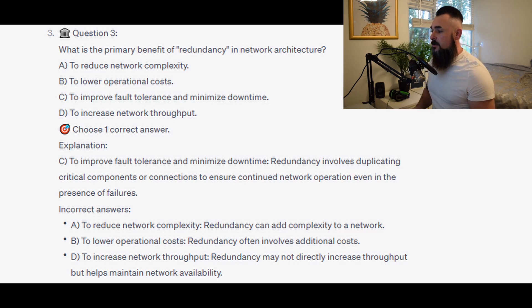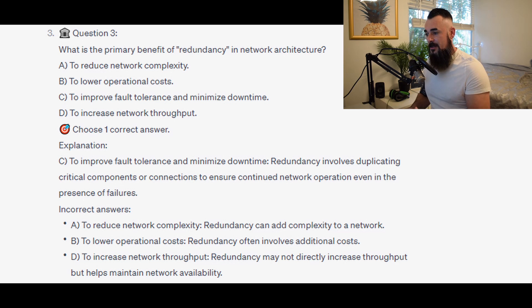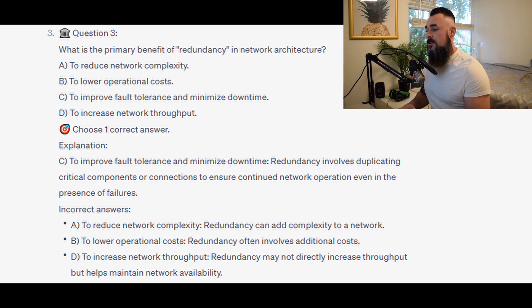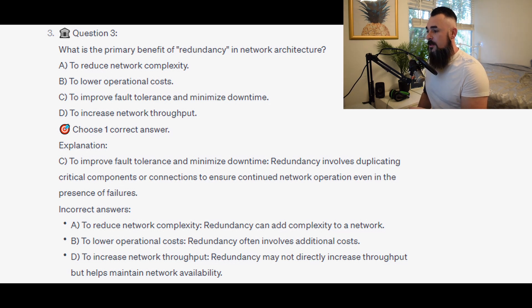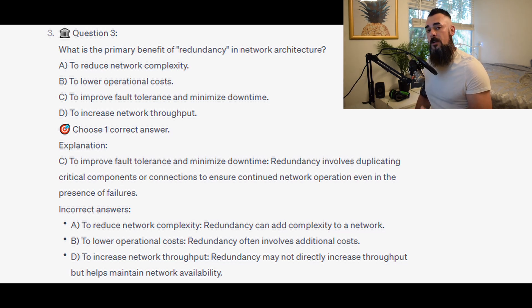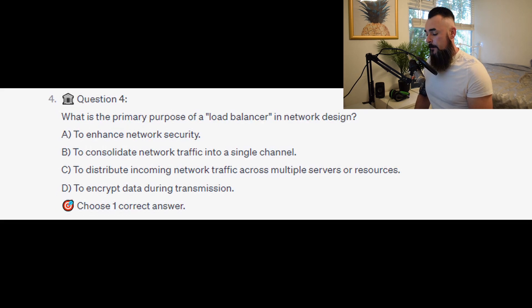For the incorrect answers: A — to reduce network complexity — redundancy can actually add complexity to a network. B — to lower operational costs — redundancy often involves additional costs. D — to increase network throughput — redundancy may not directly increase throughput, but it helps maintain network availability.